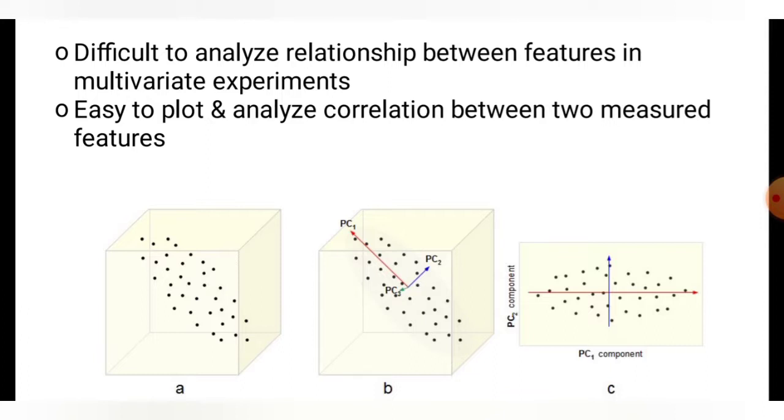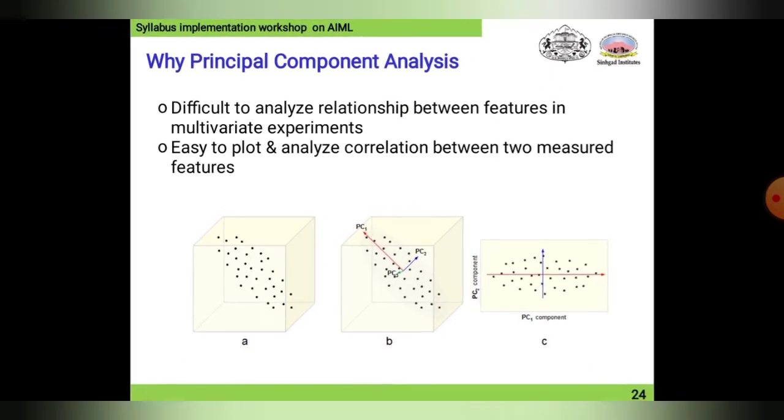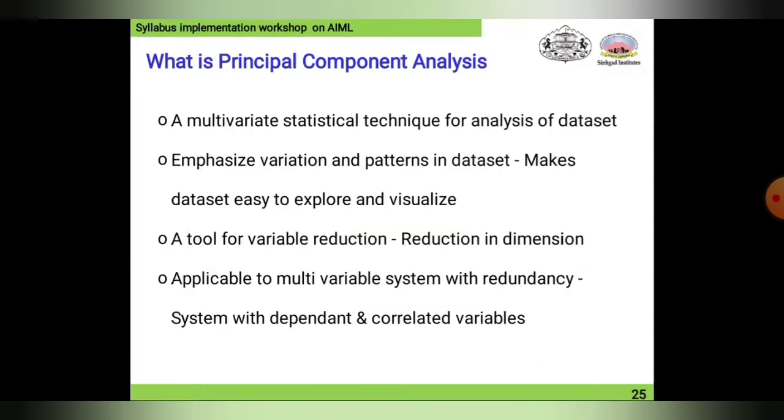In figure C we can see that the PC1 component and PC2 component, the data set can be plotted on that particular plane, PC1 versus PC2 component. We can figure out on that plane how much data or which exact data sets are plotted nearest to that particular axis. This is why Principal Component Analysis is used.